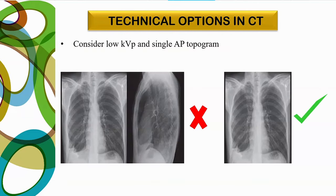Consider using low kVp for the topogram and acquiring only a single AP topogram rather than both AP and lateral. A single AP topogram taken at low kVp is sufficient for most pediatric CT studies.